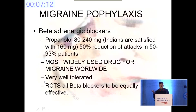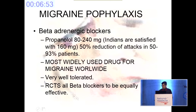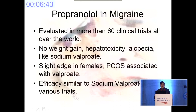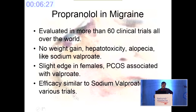Propranolol is our very frequently used beta blocker. It can be used up to 240 mg, though personally I have never gone beyond 160. It must be used with caution in patients with diabetes, must be avoided in asthmatics, and should be avoided in young males because it is lipid soluble, crosses the blood-brain barrier, and can cause impotence and erectile dysfunction. It has been evaluated in more than 60 clinical trials. The good points are it does not cause weight gain, no hepatotoxicity, no alopecia like sodium valproate, and it has a slight edge in females due to the polycystic ovarian disease seen with valproate.